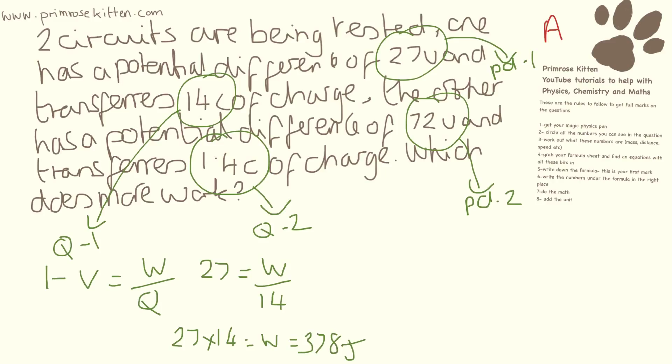So I'll change color to do circuit 2 for you to make it a bit clearer. So we have V equals W over Q. V in this situation is 72. We're trying to find W over 1.4. So 72 times 1.4 is going to equal 100.8 joules. So the answer we're looking for is circuit 1 does more work.